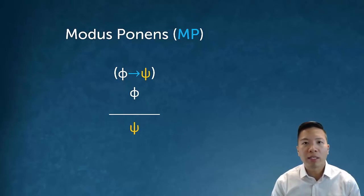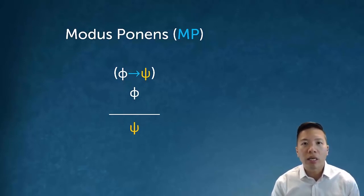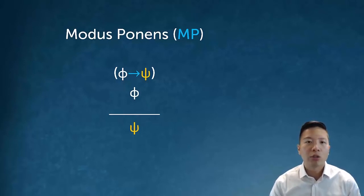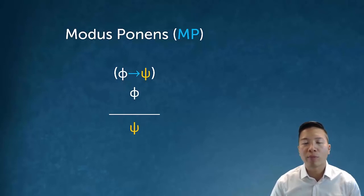We've seen modus ponens many times before. The classic example is: if it's raining, then the sidewalk is wet. If we know it's raining, then we can conclude that the sidewalk is wet. So now we know that this general inference pattern is called modus ponens.